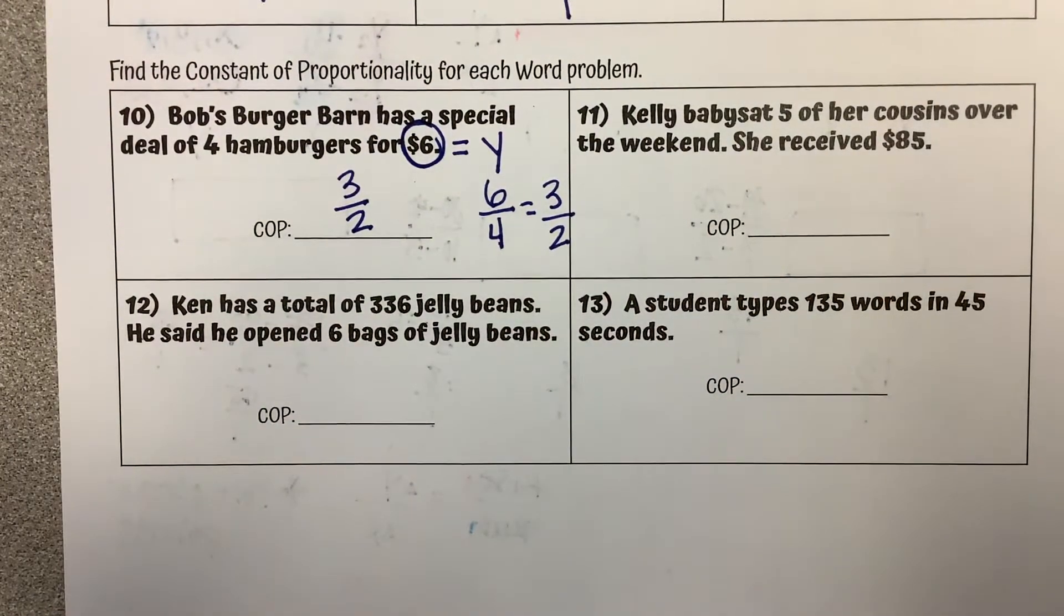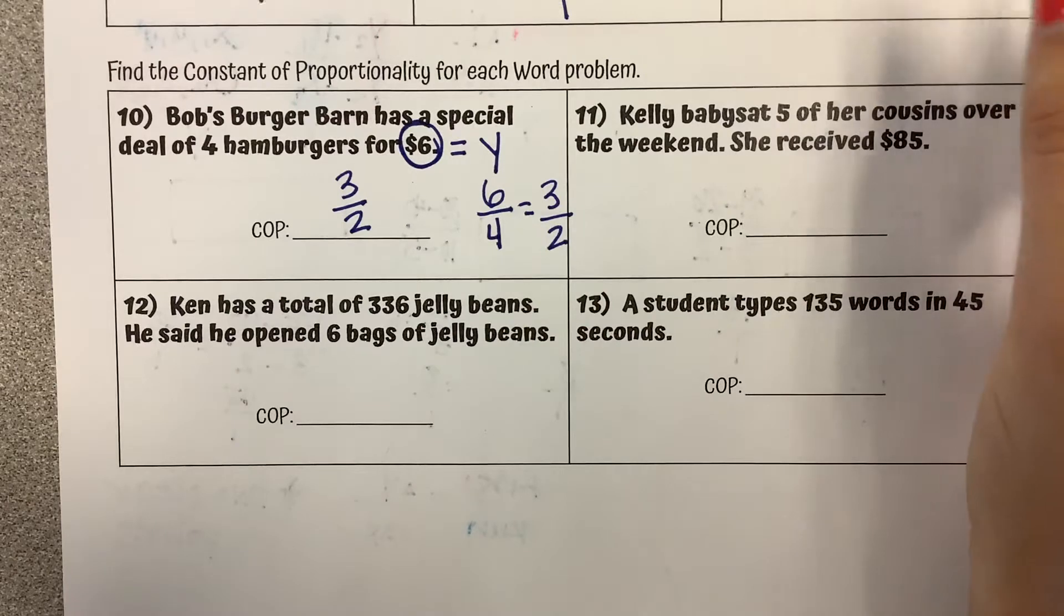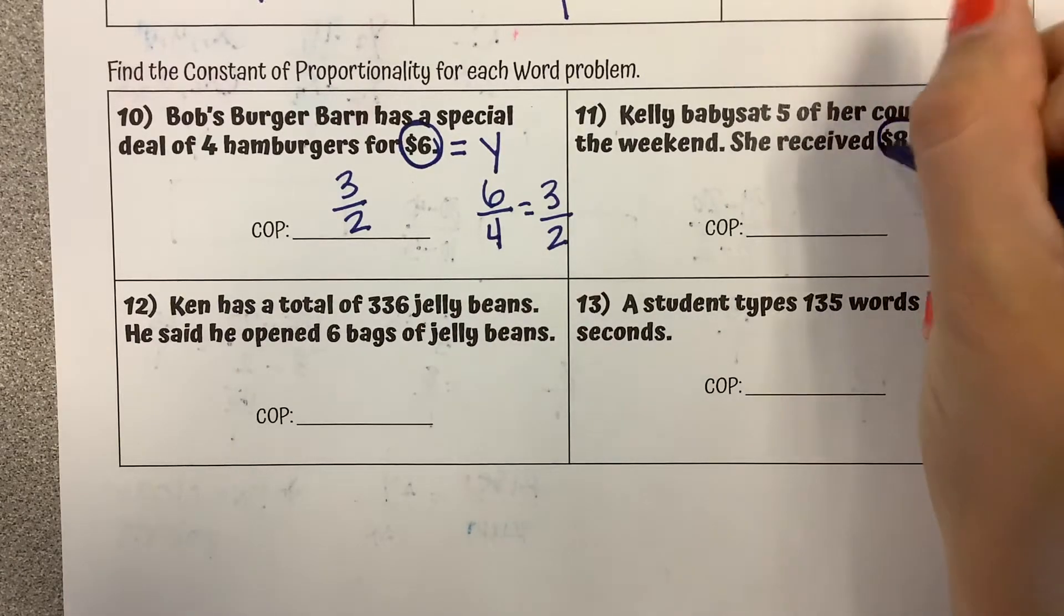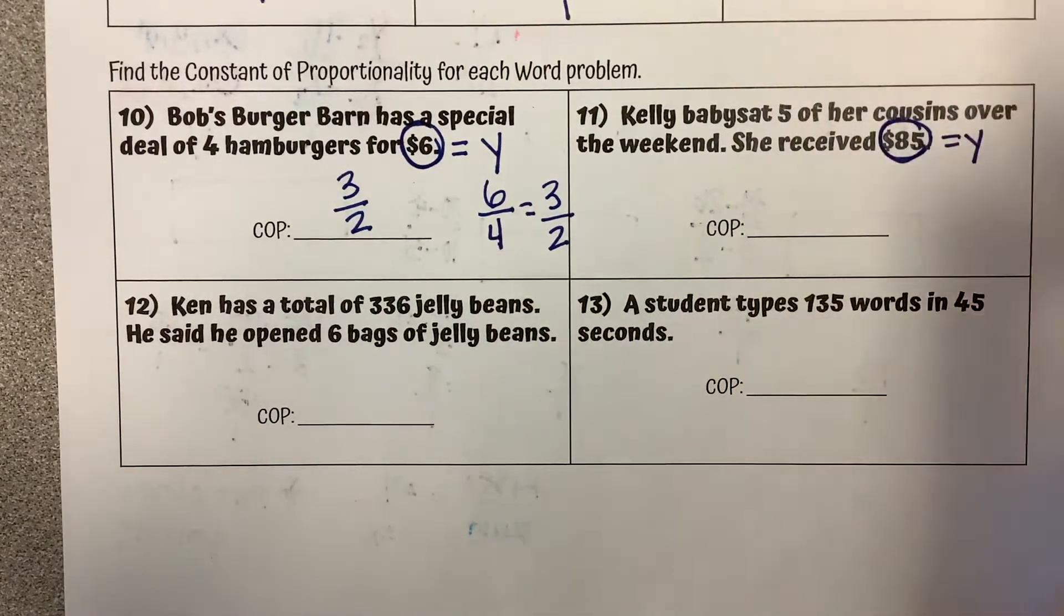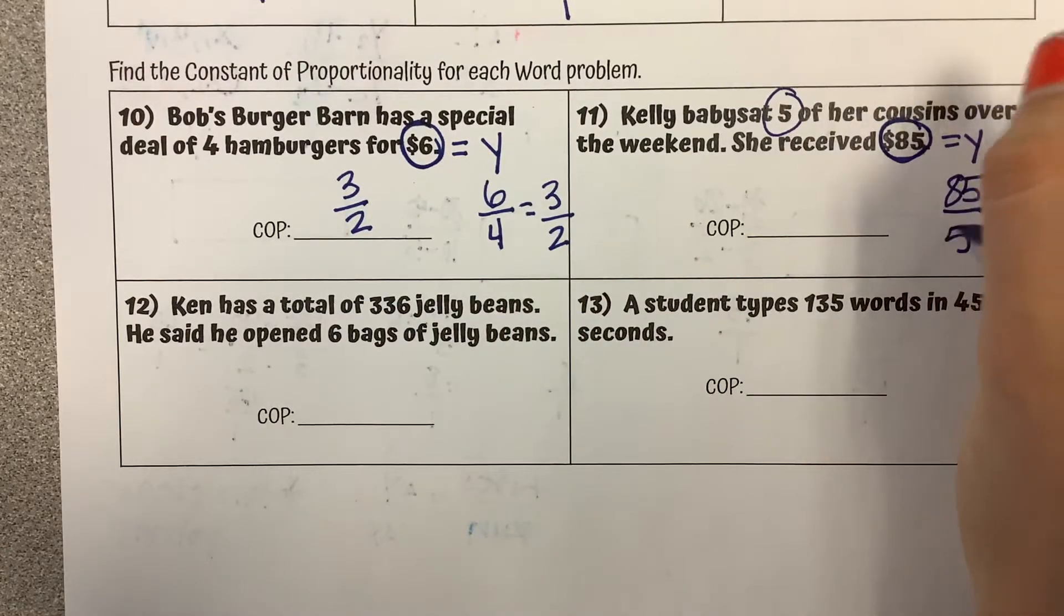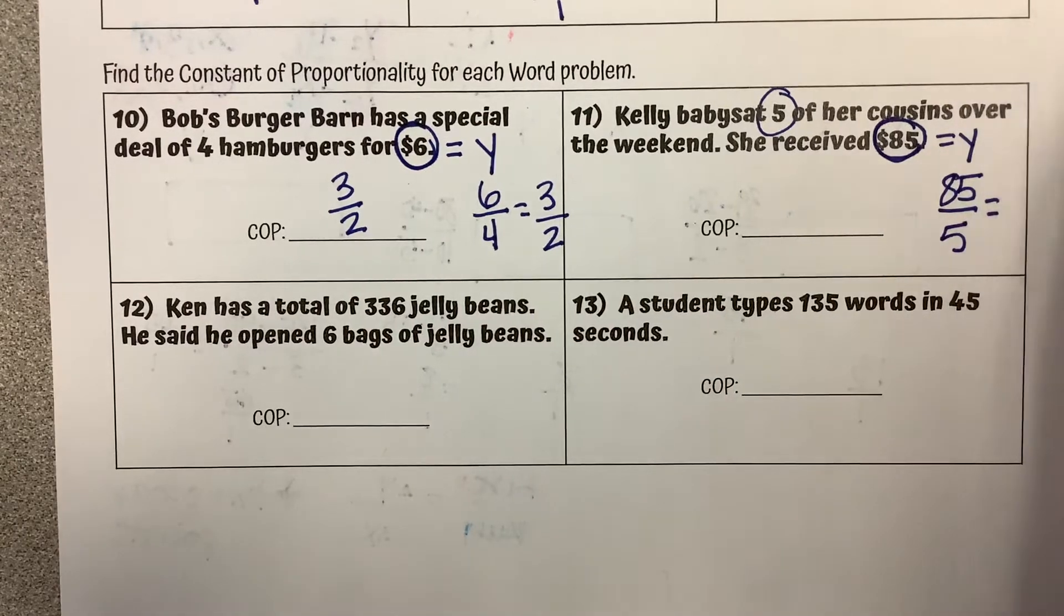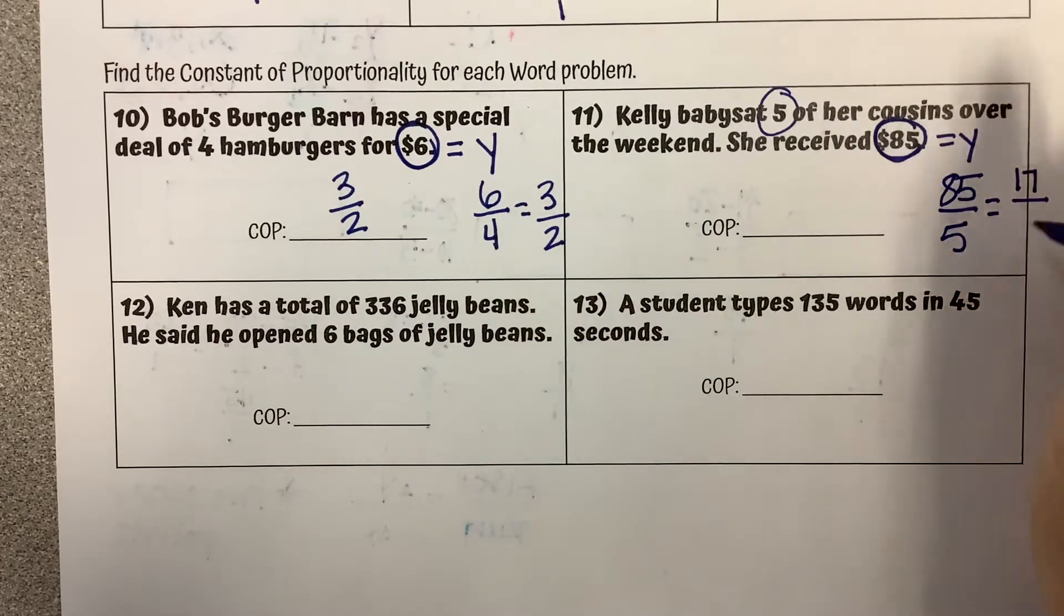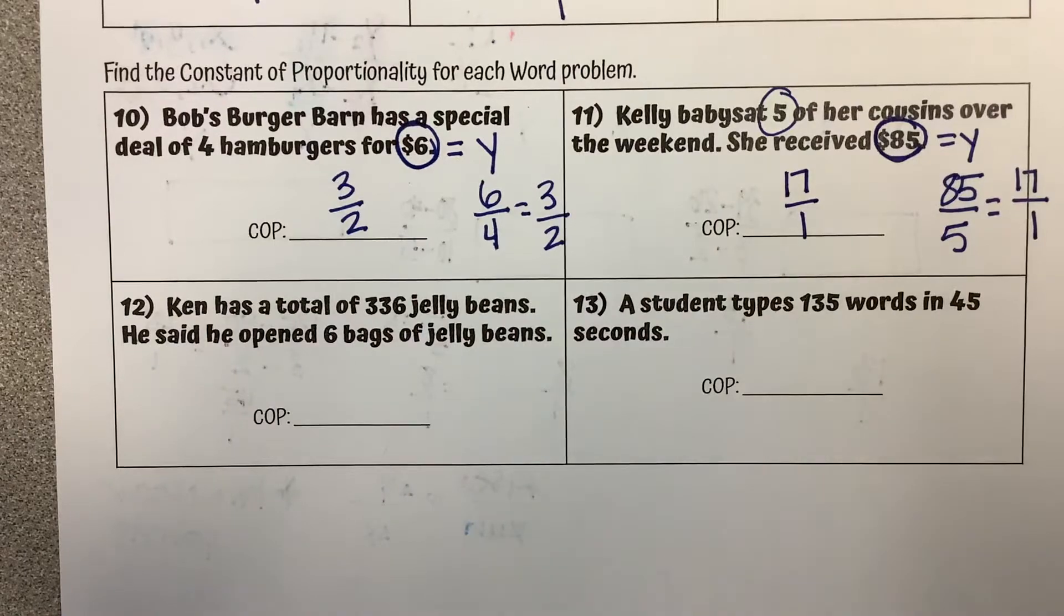Number 11, Kelly babysat five of her cousins over the weekend. She receives $85. So again generally speaking, 85 is money that's going to be our y value over the value of 5. So we're going to take 85 over 5 and we're simplifying that. 85 divided by 5 is 17 over 5 divided by 5 is 1. So our constant of proportionality is 17 over 1.